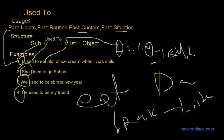Then we have the object. Object is very important — without an object, we cannot get the meaning of the sentence. For example, if I say 'I used to eat,' you will ask 'eat what?' — 'I used to eat biryani.' Similarly, 'she used to go where?' Without the object, you will be confused about where she used to go — to the park, to school? So, without an object, we cannot get the proper meaning of the sentence.